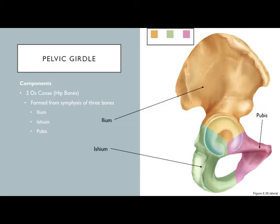Now for the pelvic girdle. Get out your hip bone — we call it the os coxa. The pelvic girdle and the pelvis are not the same thing — similar to how the arm and forearm are different. The pelvic girdle is made up of two hip bones, two os coxae, that come together in the middle. Each os coxa is actually three bones that fuse in early adulthood (around 16–18 years old): the ilium, ischium, and pubis.